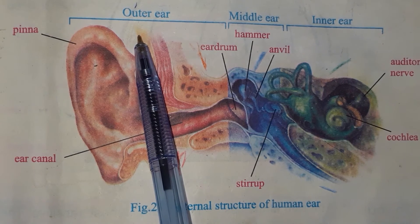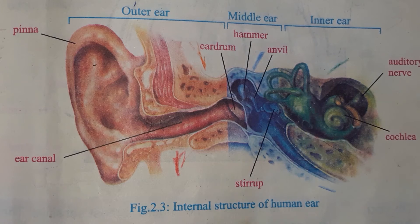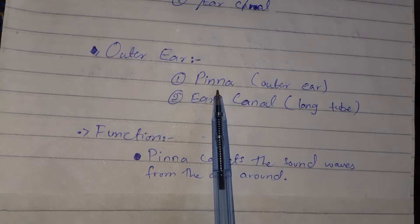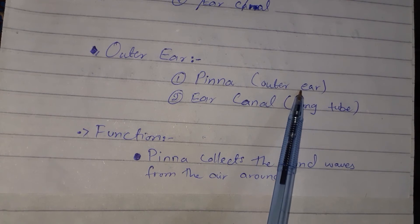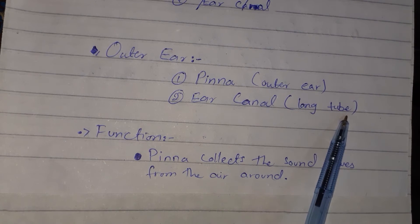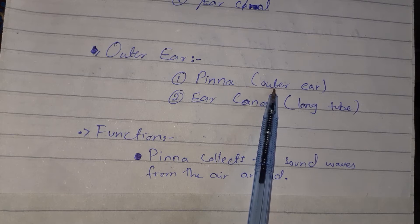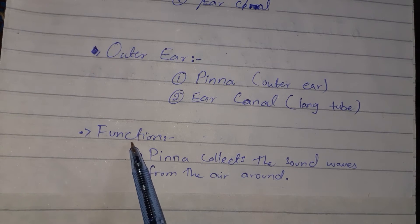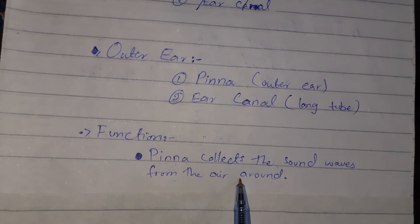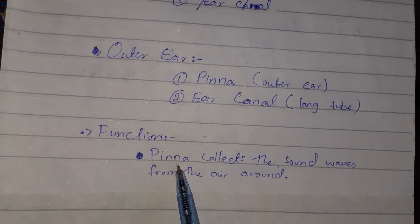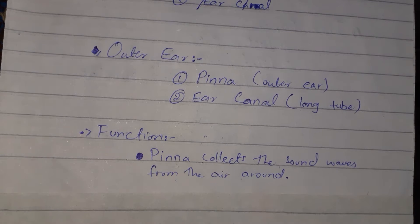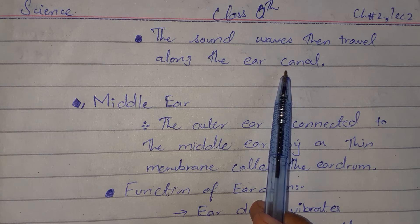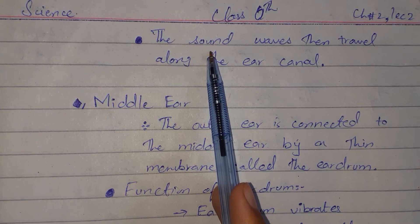Now we will start with the outer ear, then we will see the middle ear, and then the inner ear. The outer ear has two portions: pinna and ear canal. The pinna is the outer ear and the ear canal is a long tube. The pinna collects the sound waves from the surroundings. The sound waves then travel along the ear canal to the eardrum.